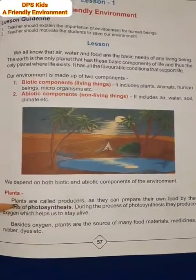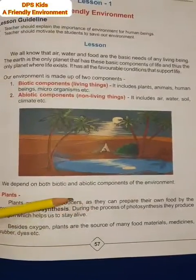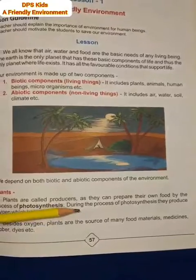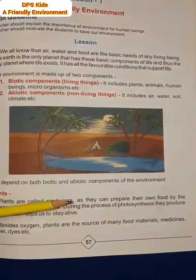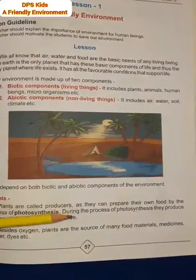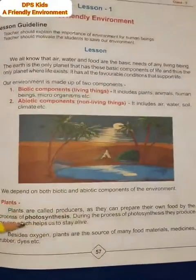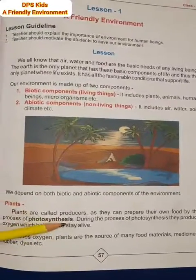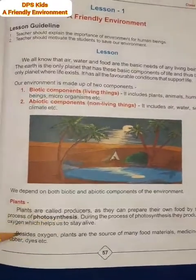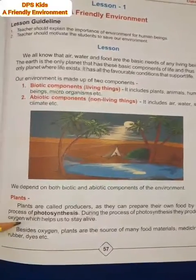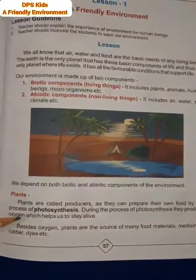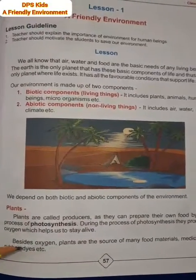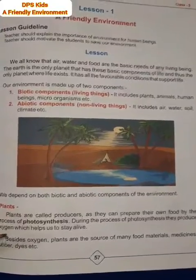अब हम जानते हैं plants के बारे में। Plants are called producers — plants को हम producers कहते हैं, मतलब बनाने वाला। Plants को producers इसलिए कहते हैं because they can prepare their own food। वो अपना खाना खुद बनाते हैं with the help of sunlight, water and carbon dioxide — इस process को हम photosynthesis कहते हैं। इस process के दौरान plants oxygen gas produce करते हैं, जिसकी वजह से हम जिन्दा रह पाते हैं।